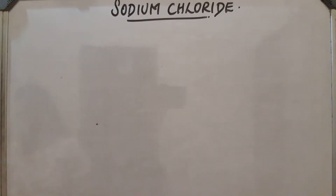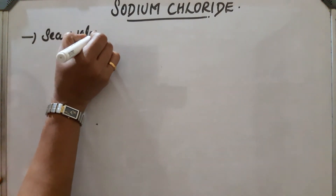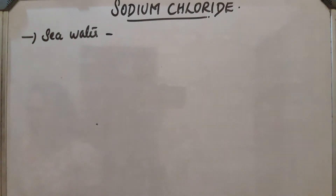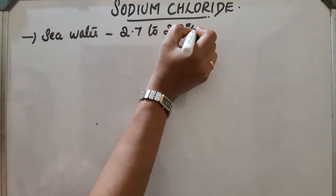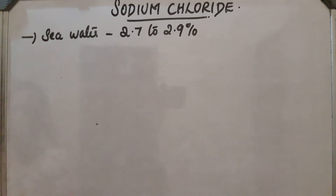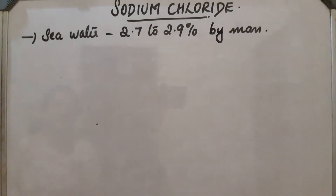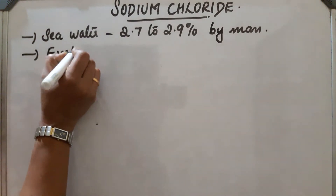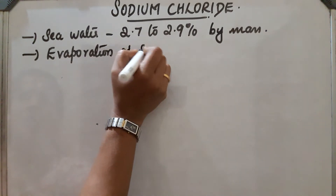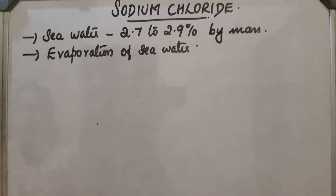Sodium chloride — its most abundant source is seawater. Seawater contains 2.7 to 2.9 percent by mass of the salt. Common salt is generally prepared by the evaporation of seawater, so we can obtain sodium chloride by the evaporation of seawater.